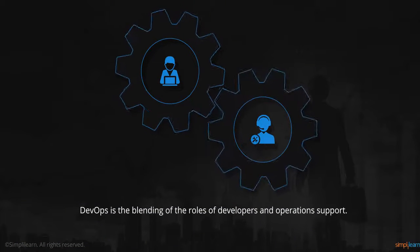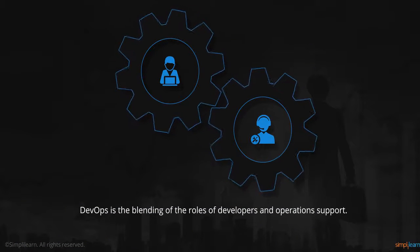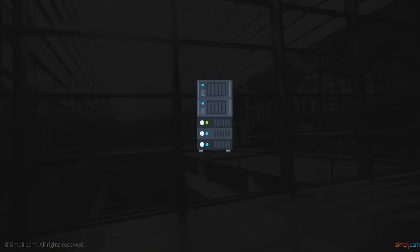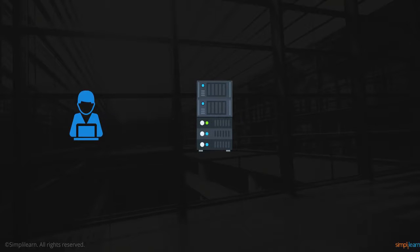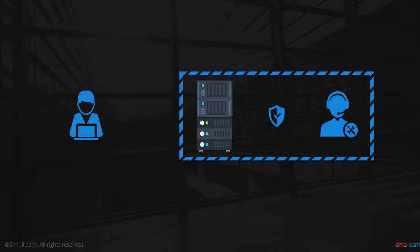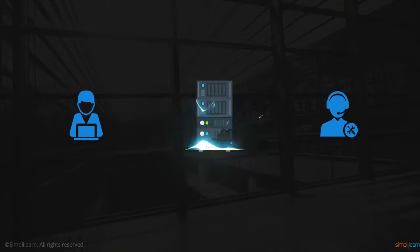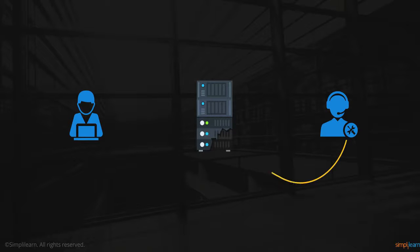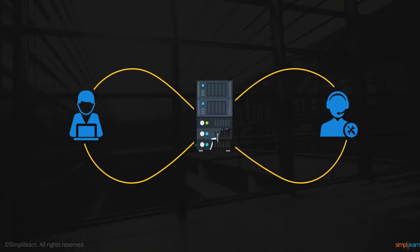DevOps is the blending of the roles of developers and operations support. In application servers, for example, developers write the code that is deployed into application servers, while the operations team maintain them. If the application fails to work on deployment, there is a knowledge gap. People with knowledge of both software development and operations are required to bridge this gap.